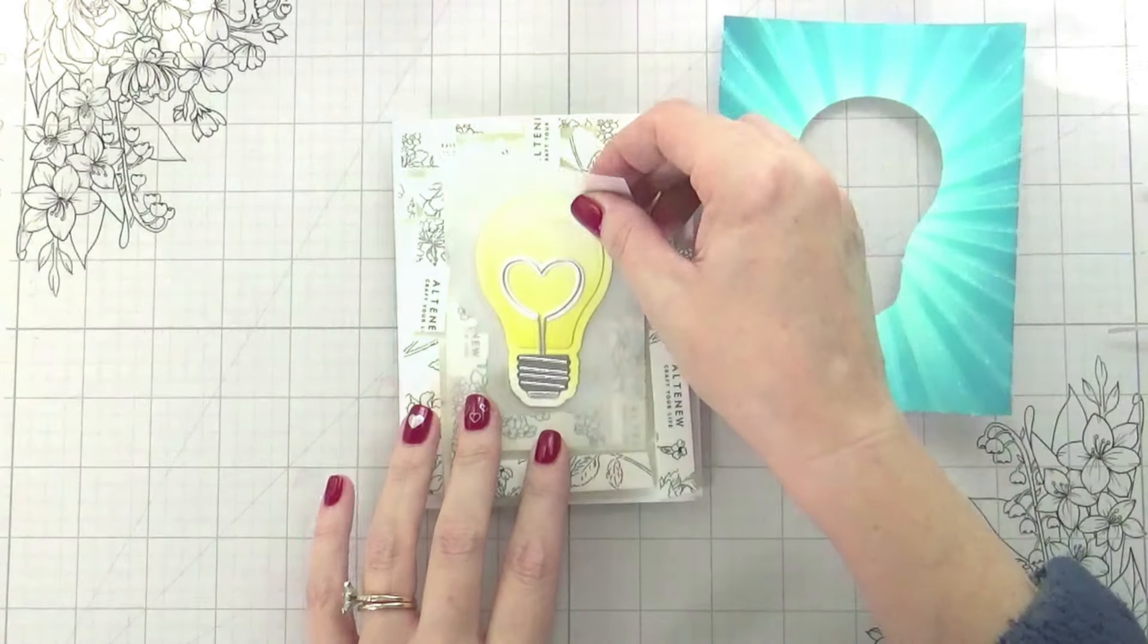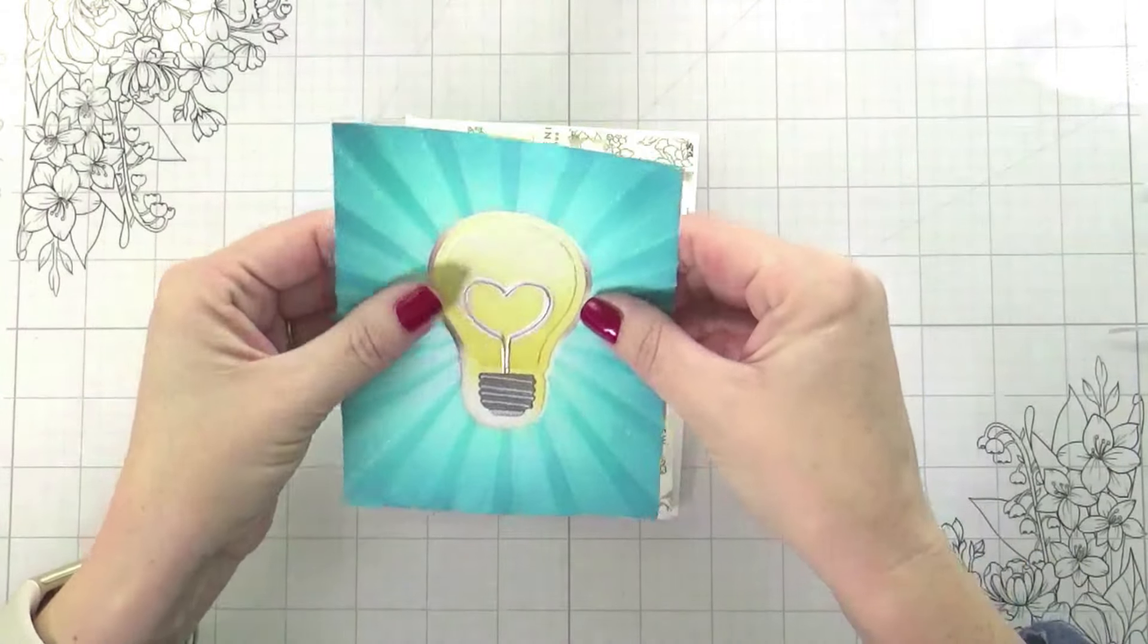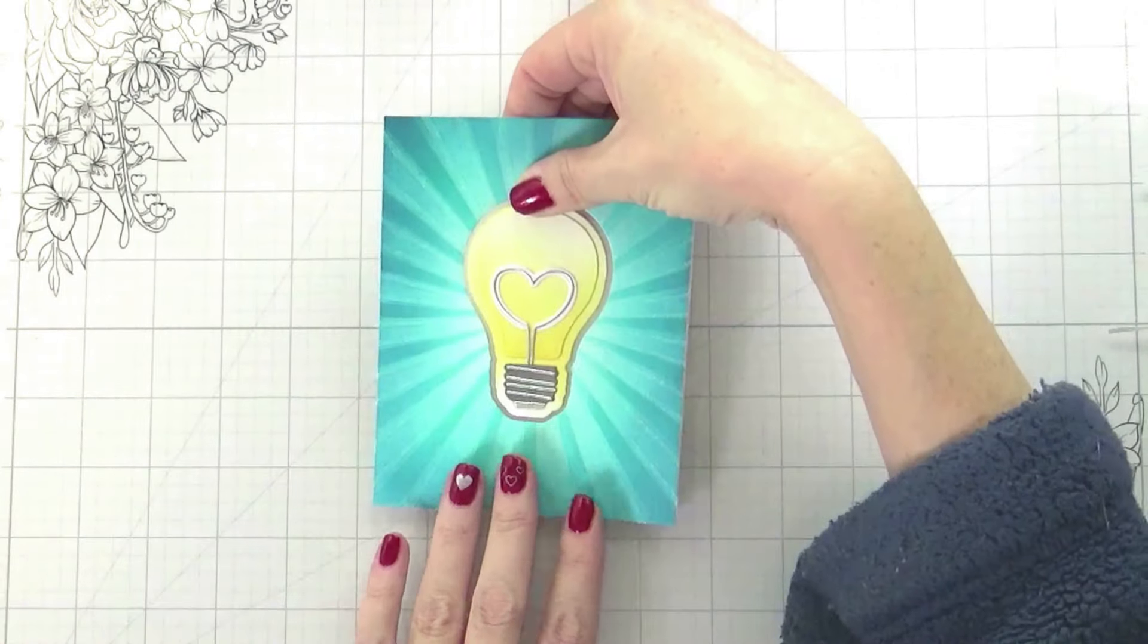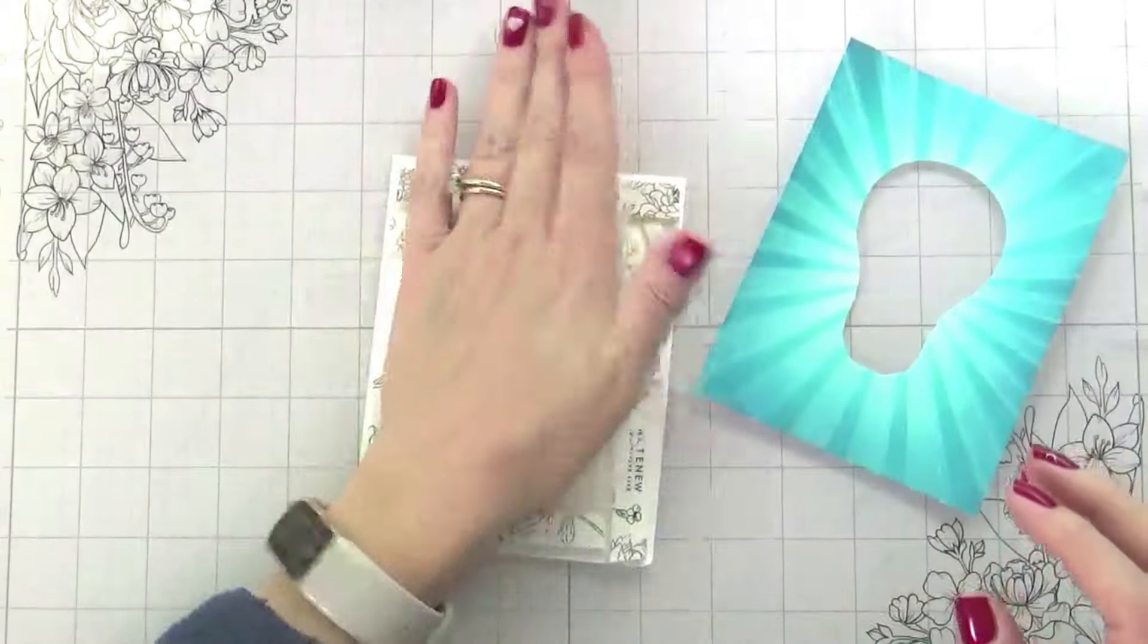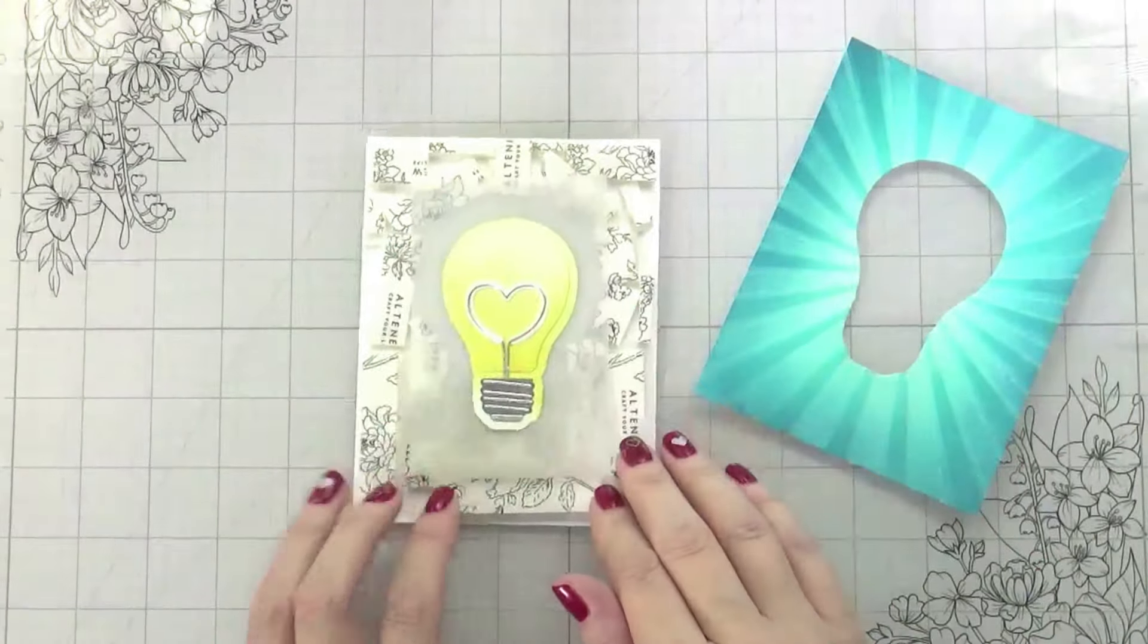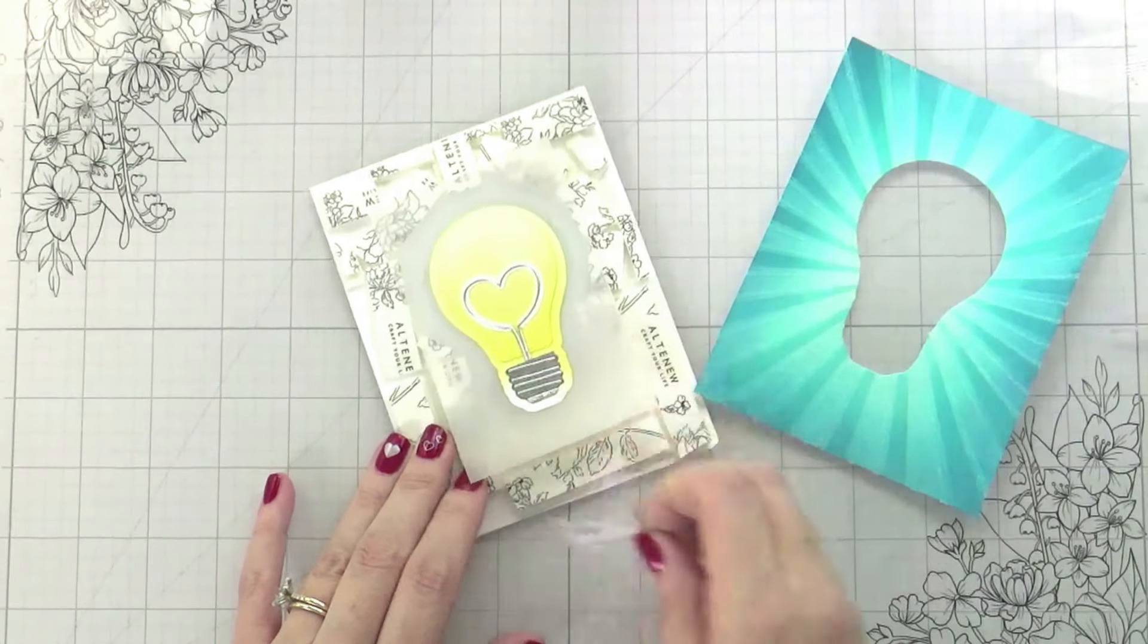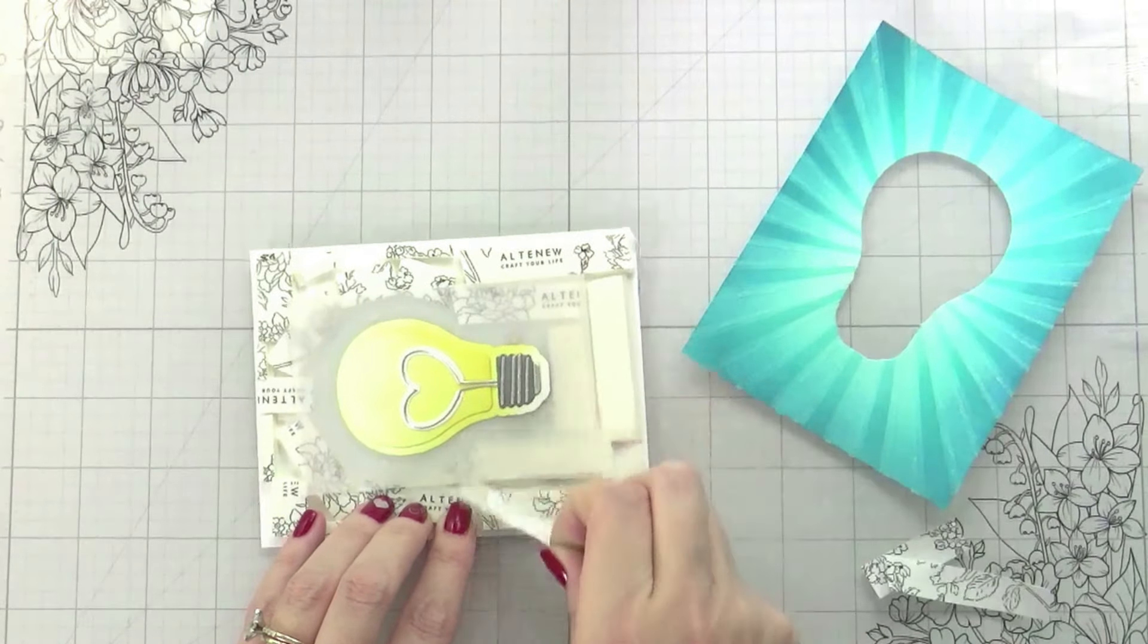Here I wanted to get my light bulb centered. I found that it was easiest to hold the whole card in my hand, get an even border, and then press it down so that it was in the right spot.